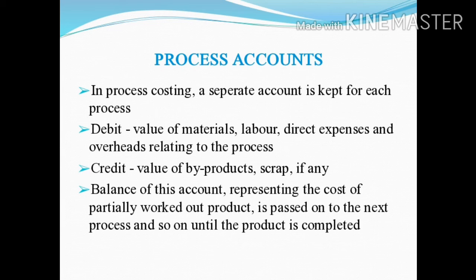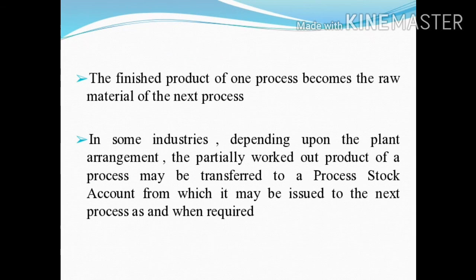The balance of this account, representing the cost of the partially worked-out product, is passed on to the next process and so on until the product is completed. For example, the balance in process 1 is passed on to process 2 account, and the balance in process 2 is passed on to process 3 account — this continuous flow occurs until the product is completed. The finished product of one process becomes the raw material of the next process.